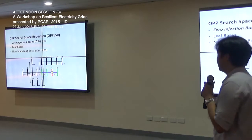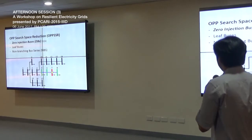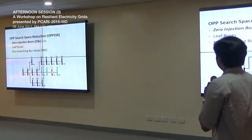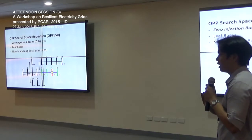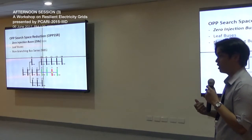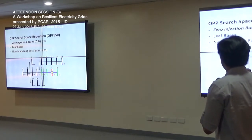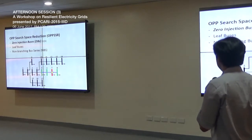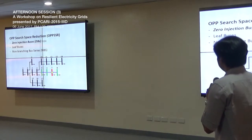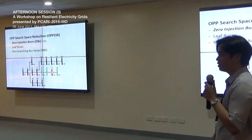Some techniques for OPP search space optimization include zero injection buses (ZIBs), leaf buses, and our proposed non-branching bus series. Zero injection buses are buses with no load or generator connected, where current going in equals current going out. With Kirchhoff's law, if you put a PMU in bus 7, bus 6 (a zero injection bus) is observable, and this extends observability to the next bus — bus 5 — based on Kirchhoff's law.